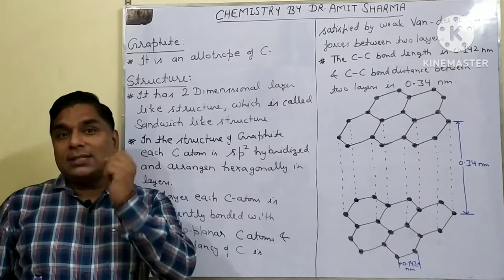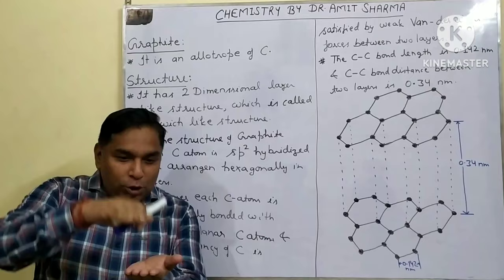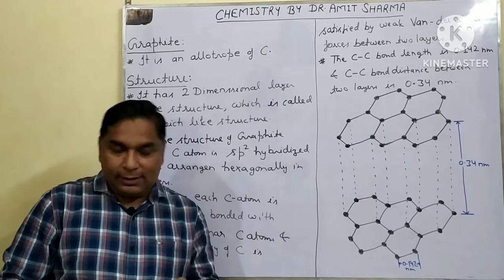This structure explains many properties of graphite. For example, a common question is: why is graphite soft in nature? Because it has a two-dimensional layer-like structure, and due to weak van der Waals forces between the two layers, it is soft and slippery. The layers can slide over each other, so it behaves like a solid lubricant.